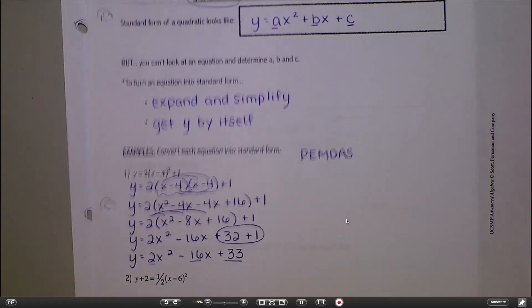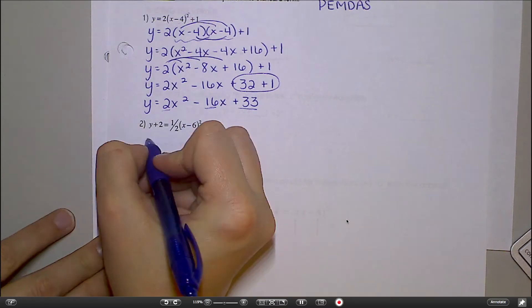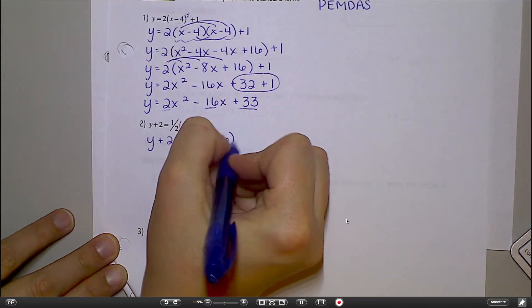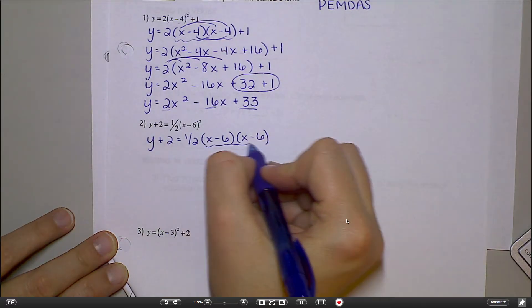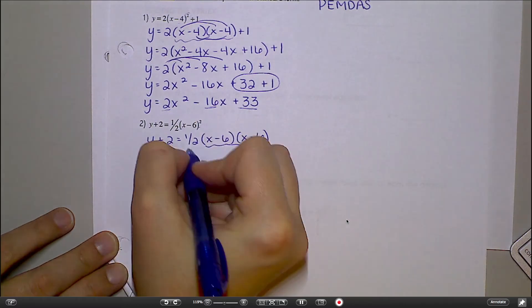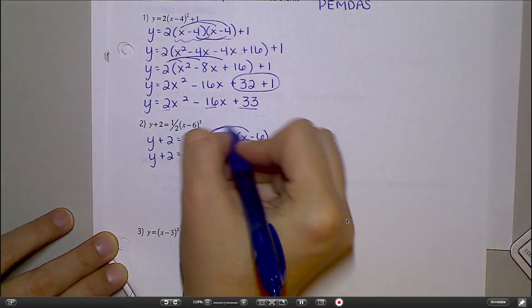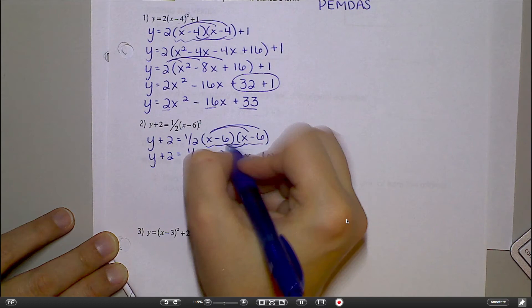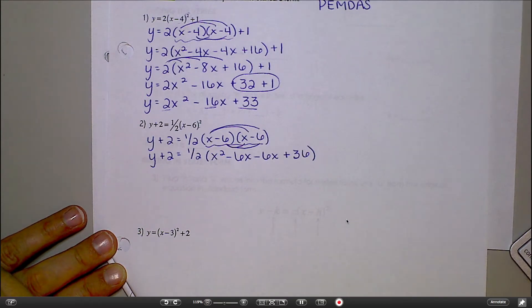Let's try one more. Let's try example number two. So first I'm going to expand this. I'm going to write it out twice. Foil these together. That would give me x squared minus 6x minus 6x plus 36. Everyone follow me okay with that?